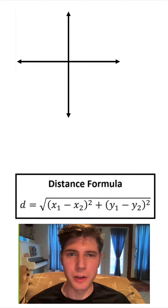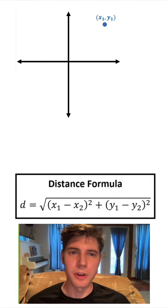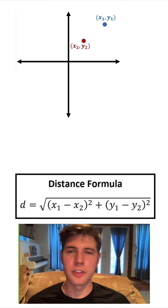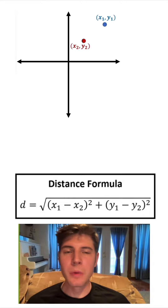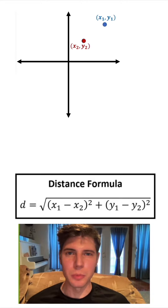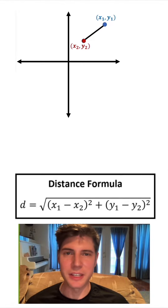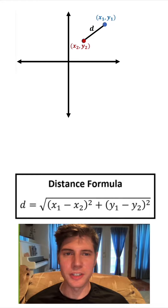Let's talk about the distance formula. We have an xy coordinate plane with a random point we'll call x1, y1, and another point we'll call x2, y2. We want to know what is the distance between these two points. If we connect our two points with a segment, the length of that segment will be the distance between our two points. We'll call it D.